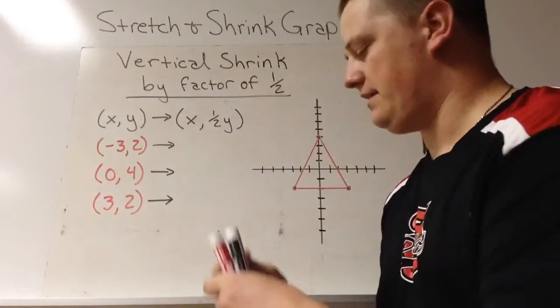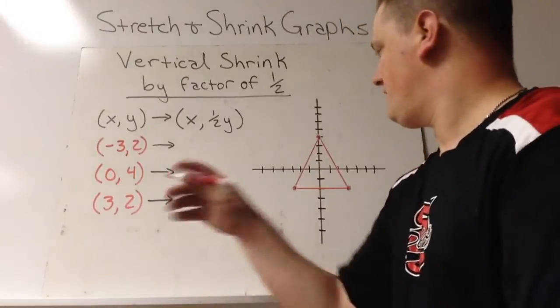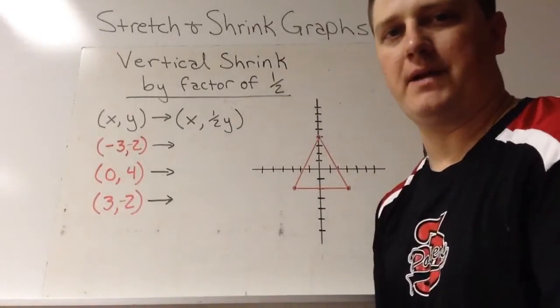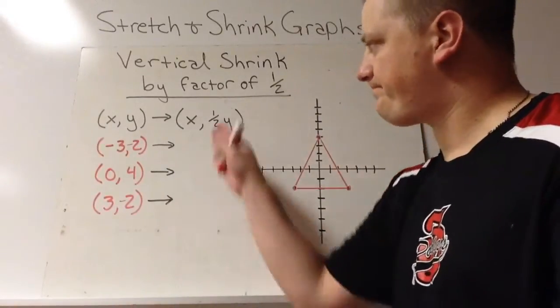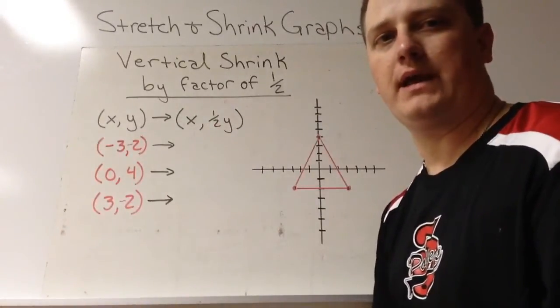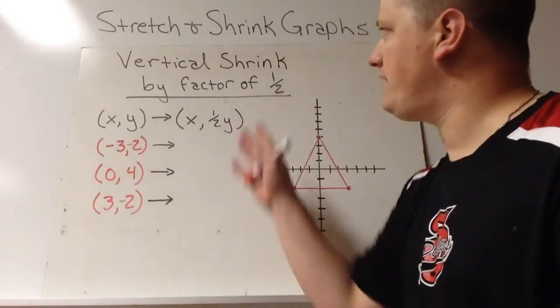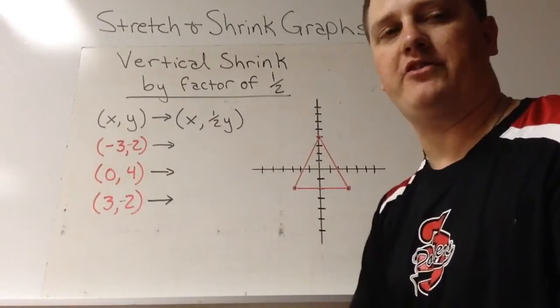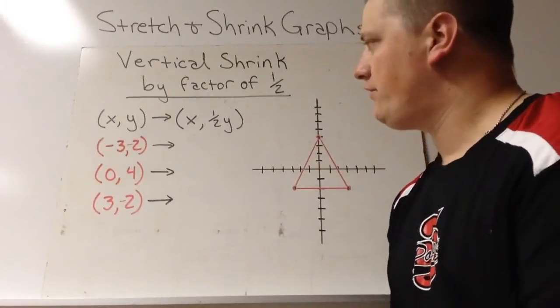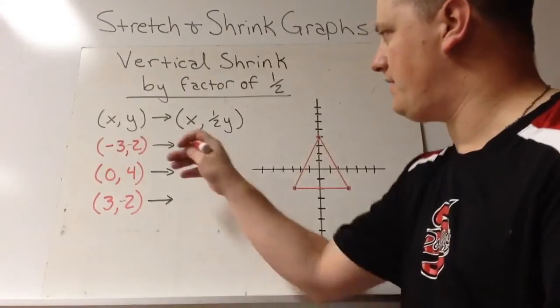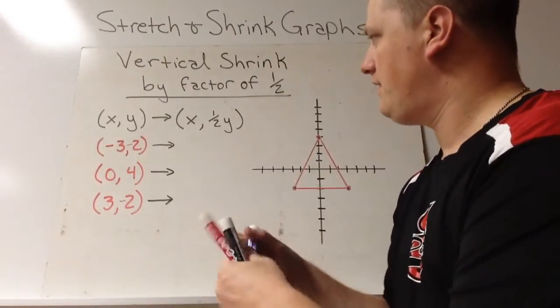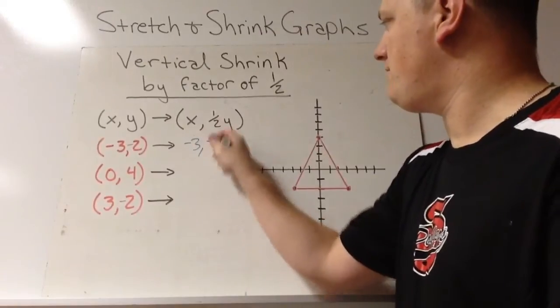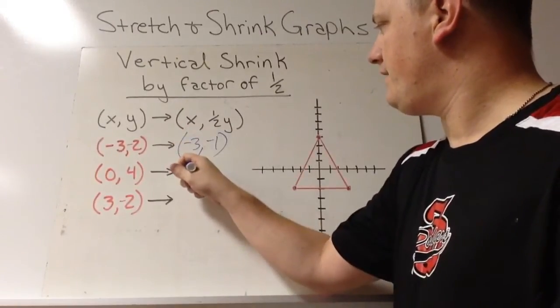So again, I made a mistake. These should be negative 2, and this should be negative 2. Struggling with my negatives today. So what we have is we want to shrink this vertical shrink by a factor of 1 half. So we're going to multiply by 1 half. 1 half is smaller than 1. I'm going to do a little math here. We're going to get negative 3, negative 1, 0, 2,